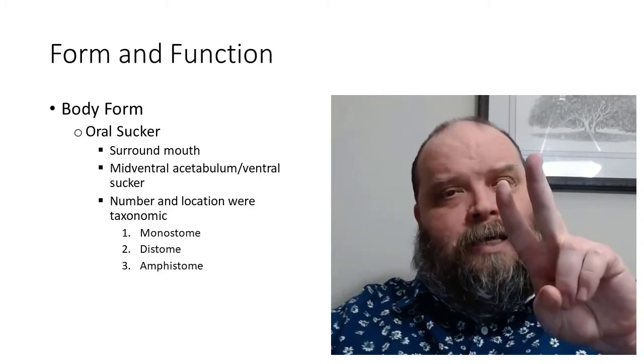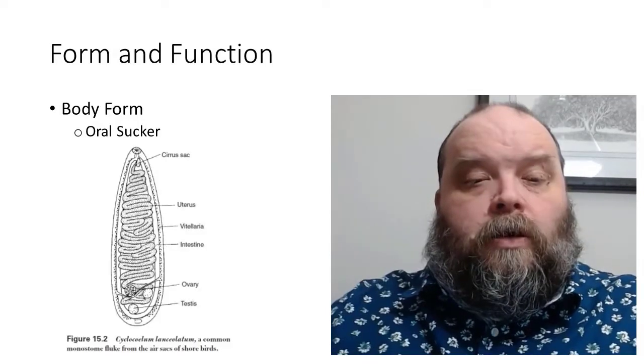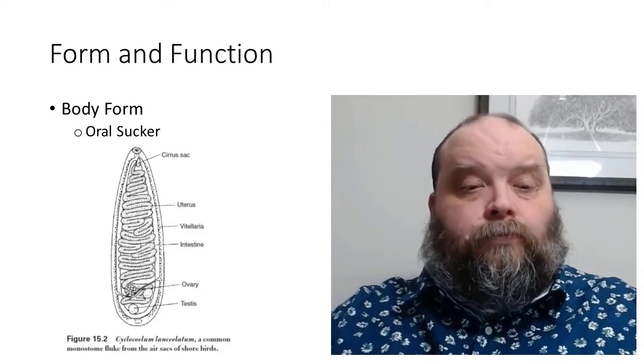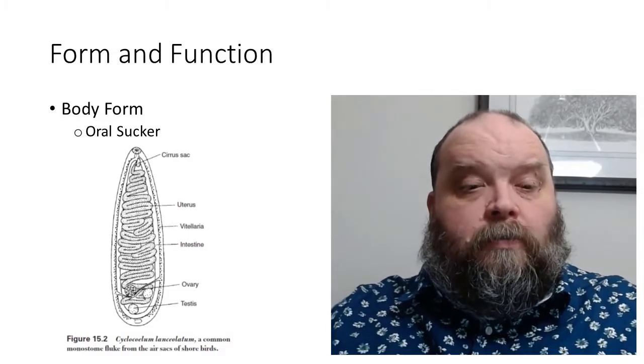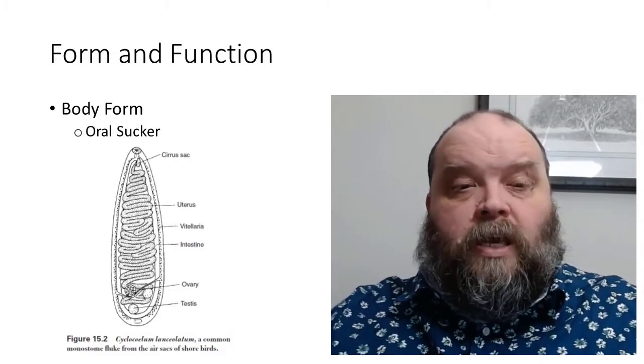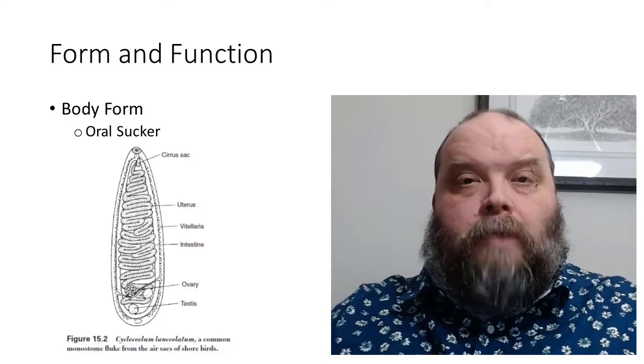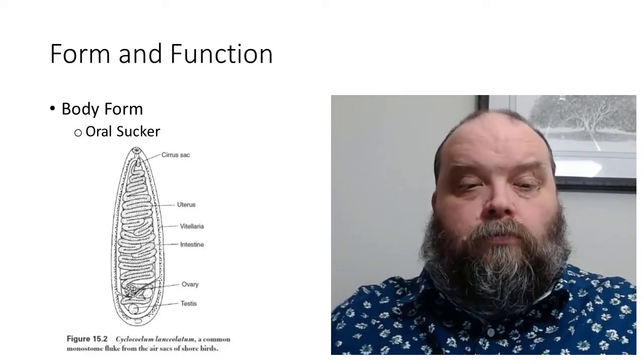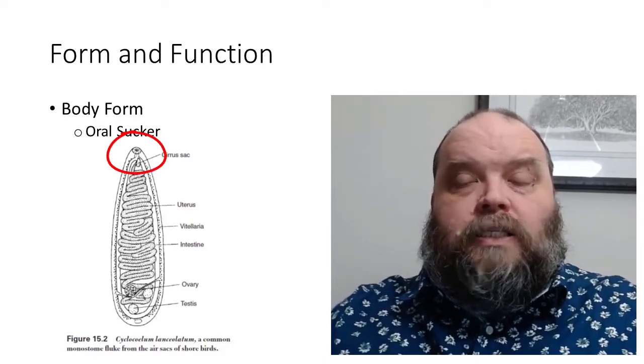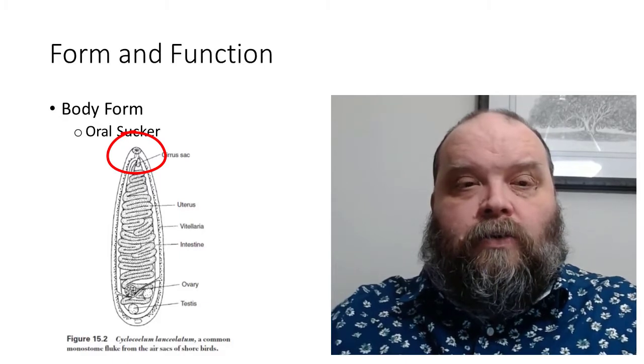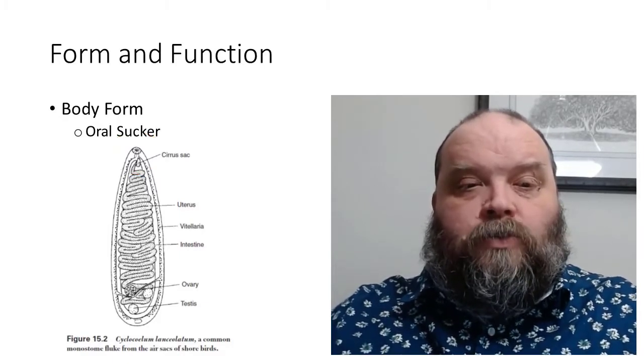Monostome, diastome, amphistome. You look here and you see Cyclinium lancelatum. It's a common monostome. It has a singular anterior sucker that surrounds the oral opening.